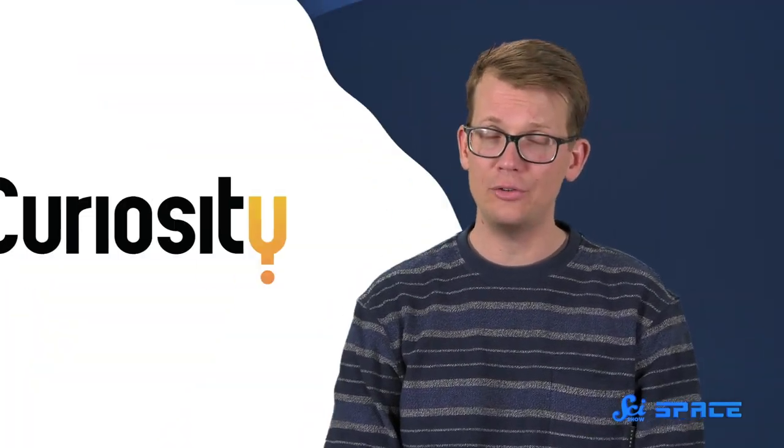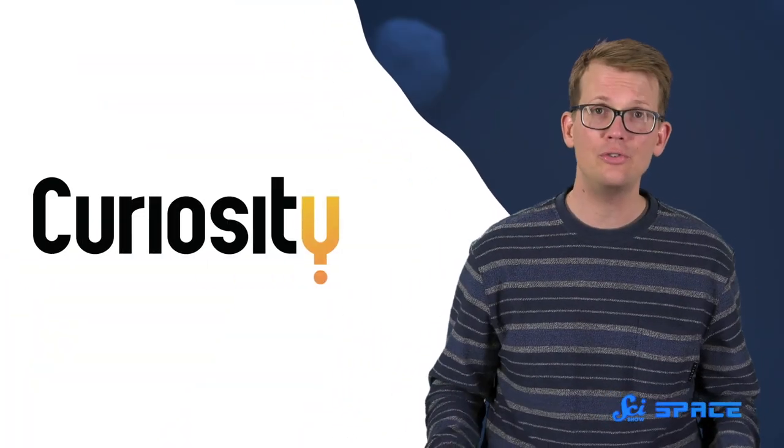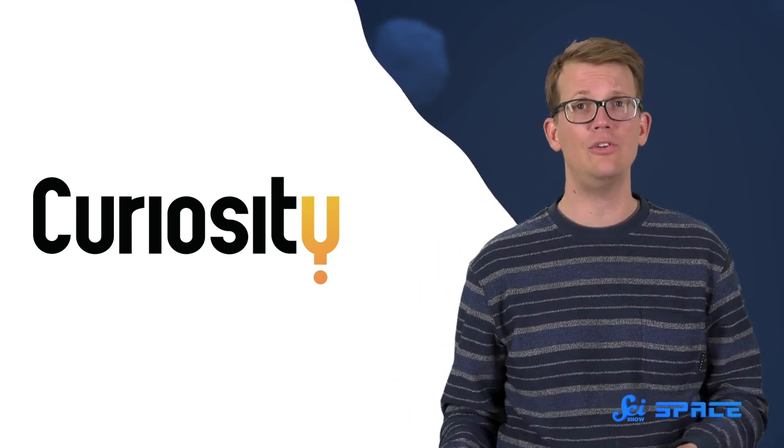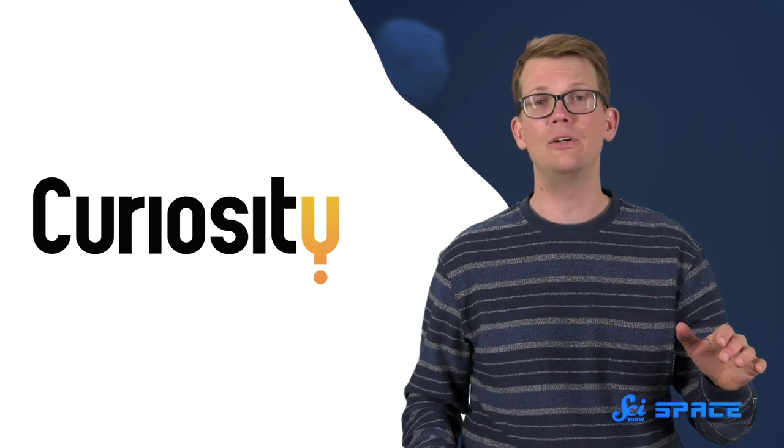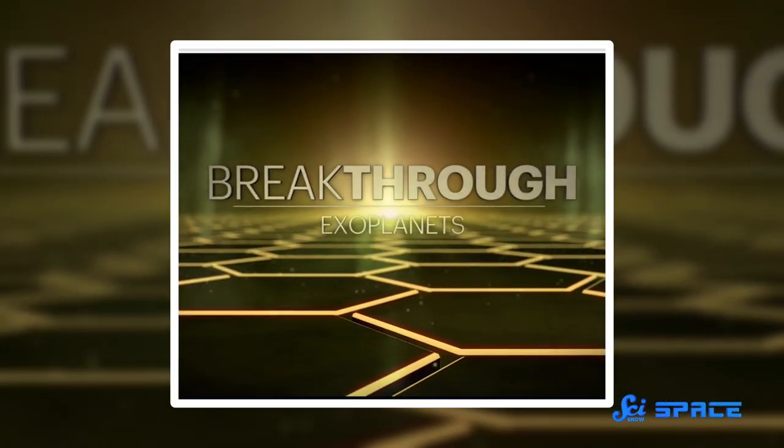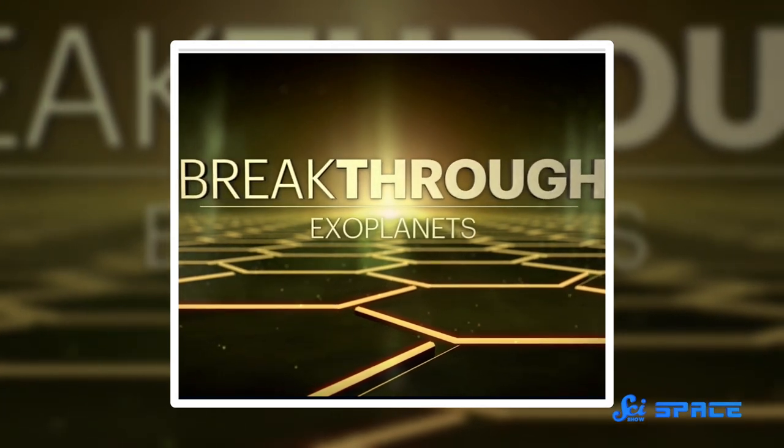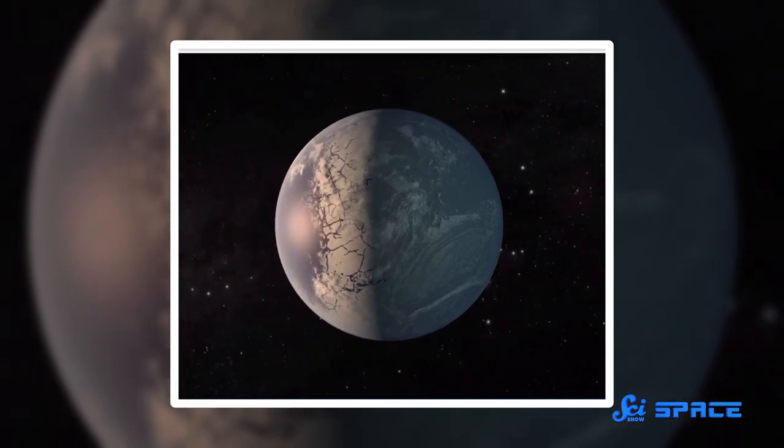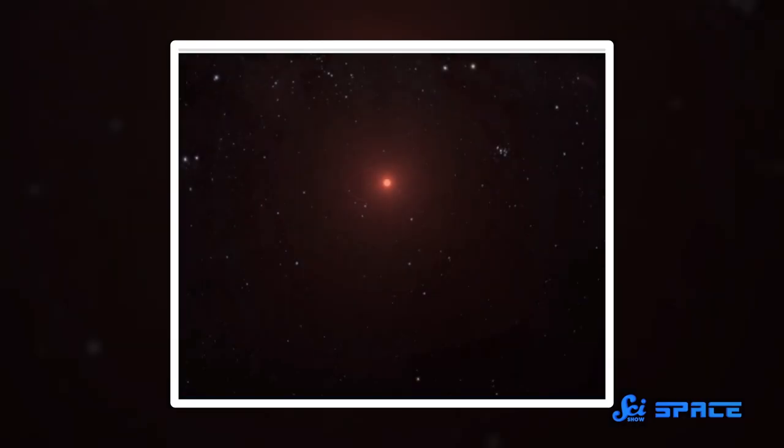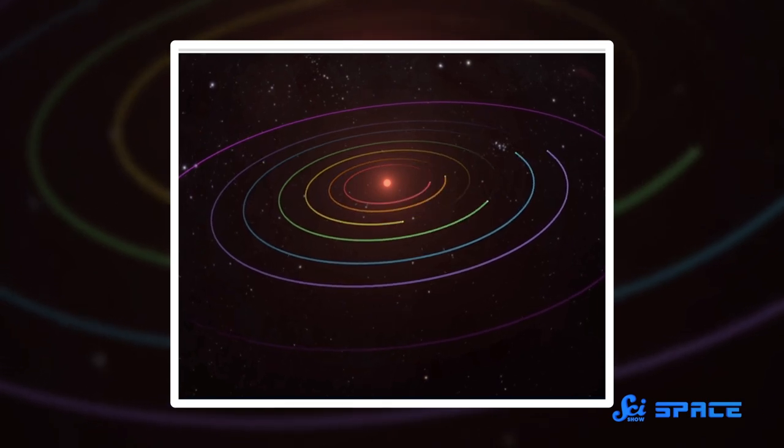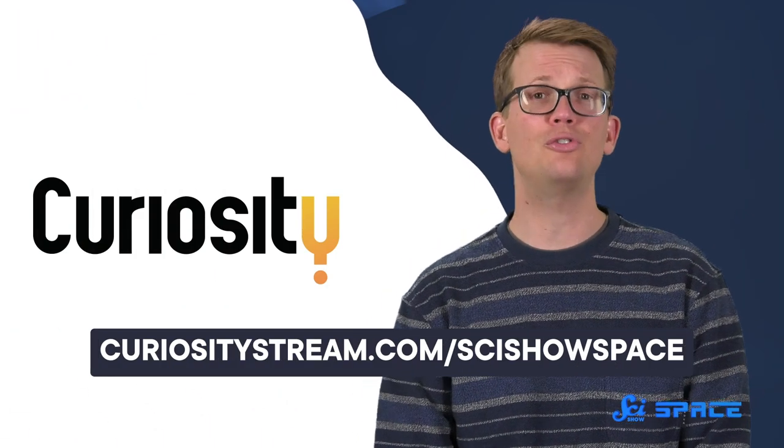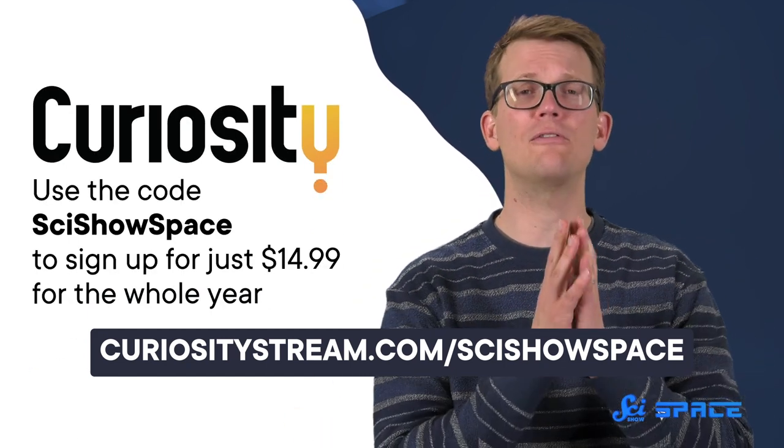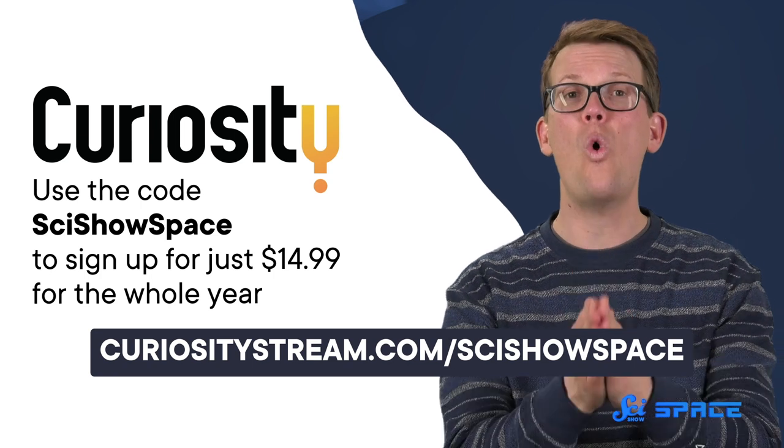Thanks for watching, and thank you to CuriosityStream for sponsoring this episode. CuriosityStream is a subscription streaming service that offers thousands of documentaries and non-fiction TV shows from some of the world's best filmmakers, including exclusive originals. If you think the possibility of finding potentially habitable exoplanets is fascinating, you might like the documentary series Breakthrough, which highlights neat scientific discoveries throughout history. They've got a whole episode on exoplanets and the TRAPPIST-1 system. If you'd like to check it out, you can head to curiositystream.com/scishowspace and use the code scishowspace to sign up for just $14.99 for the whole year.